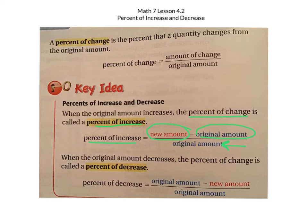When the original amount decreases, the percent of change is called the percent of decrease. Again you always divide by the original amount, but the difference is you're going to put the original amount first and subtract the new amount and then divide by the original amount. So you just reverse what you did on the percent of increase.